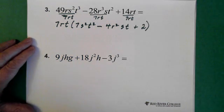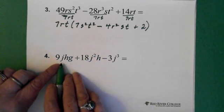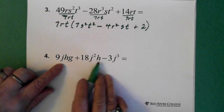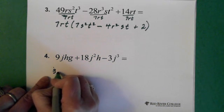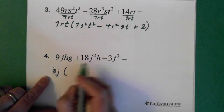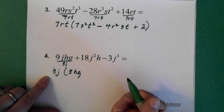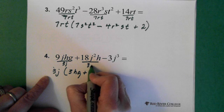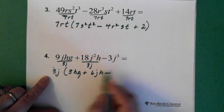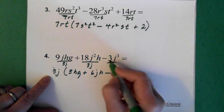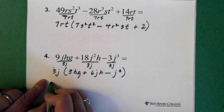Now, question number 4. Again, what's common to every term? We can see that in every term we have a 3. We can see in every term we have a J. But we don't have an H in every term. And we don't have a G. So then our common factor is 3J. So we pull the 3J out. Take 3J out of here. And we're left with 3HG. And then we have a plus sign. We're essentially dividing this by 3J. And we end up with 6JH. And then minus the 3. So again, 3J. 3 divided by 3 is 1. So again, J cubed divided by J is J squared. Okay? So there's our answer.